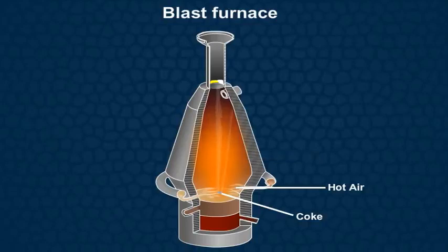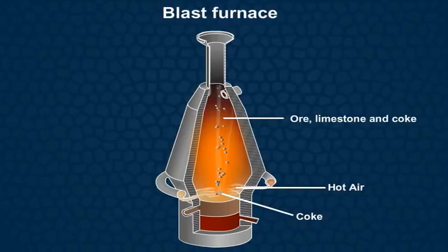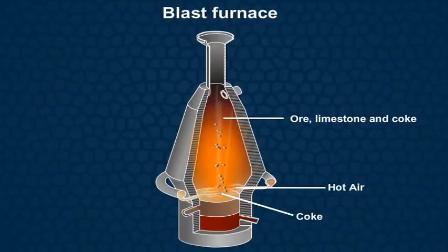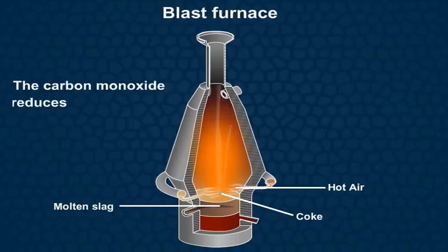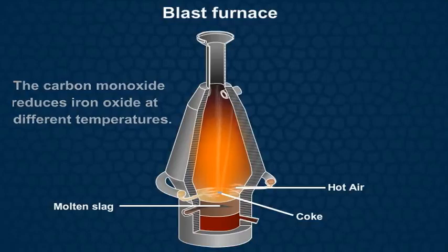At this moment, the ore, limestone, and coke are added from the top of the furnace. The limestone is decomposed to produce molten slag, which is collected at the bottom. The carbon monoxide reduces iron oxide at different temperatures.